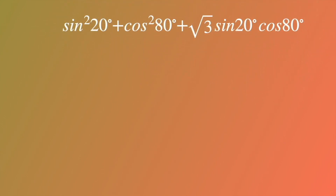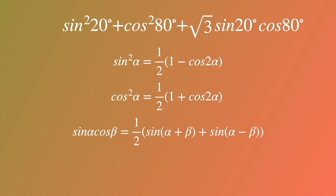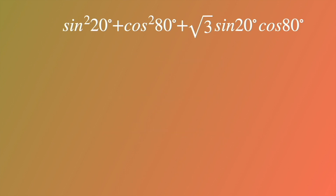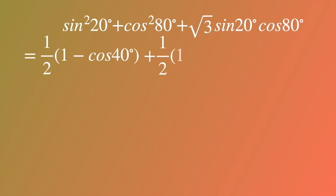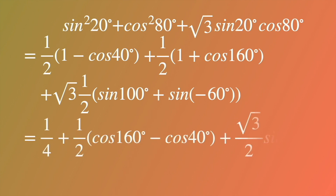Now let's come back to see the second way to solve the problem. We use: sine squared of alpha equals 1/2 times (1 minus cosine of 2 alpha); cosine squared of alpha equals 1/2 times (1 plus cosine of 2 alpha); and sine alpha cosine beta equals 1/2 times (sine of alpha plus beta plus sine of alpha minus beta). So sine squared of 20 degrees equals 1/2 times (1 minus cosine 40 degrees), and cosine squared of 80 degrees equals 1/2 times (1 plus cosine 160 degrees). Sine of 20 degrees times cosine of 80 degrees can be written as 1/2 times (sine of 100 degrees plus sine of negative 60 degrees).